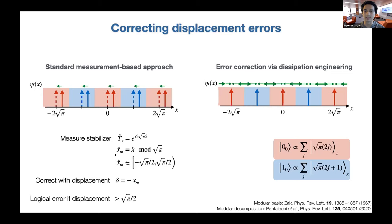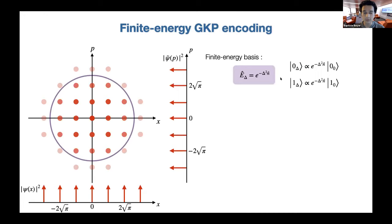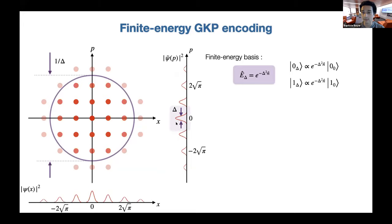In practice, any measurement device has finite precision, so the energy added is finite, but it underlines that this approach does not account for the amount of energy in the GKP code. Especially in microwave resonators or motional modes of trapped ions, we want good control of energy because too many photons can cause bad things — for example, nonlinearities can kick in. So I want to describe an approach to GKP which really takes into account the finite energy nature of the code.